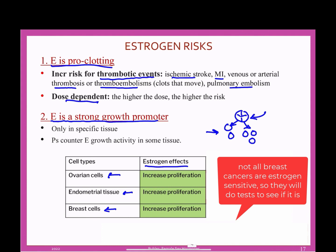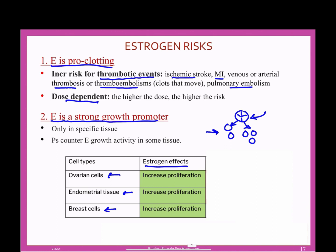Increased cell proliferation can be a real problem if you have cancer — growth of cancers in any of these cells would be faster. These estrogens are not carcinogenic and not mutagenic, so they don't cause cancer, but they do increase its growth. If it's a cancer that has this estrogen effect, we'd call it an estrogen-sensitive or E-sensitive cancer. Physiologically, you don't want proliferation all the time, so progesterone has the opposite effect in many of these tissues, suppressing proliferation in ovarian and endometrial cells to balance out the estrogen effects.